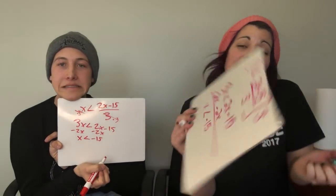Let's review the steps. The first step is to check for distributive property. The second step is to combine like terms on either side. The third step is to get the variables on one side of the inequality. The fourth step is to solve like an equation once the variable is isolated on one side. Thanks Luke for coming in!